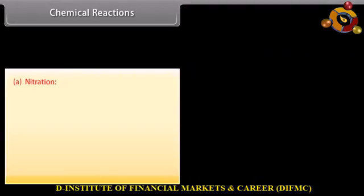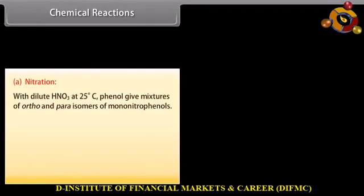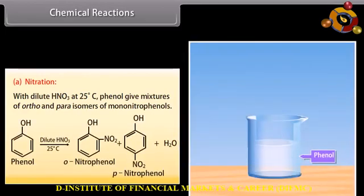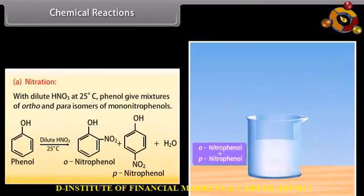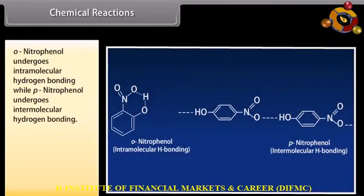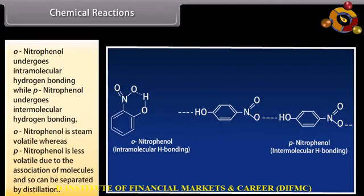Nitration: with dilute nitric acid at 25°C, phenol gives a mixture of ortho- and para-isomers of mononitrophenols. Ortho-nitrophenol undergoes intramolecular hydrogen bonding while para-nitrophenol undergoes intermolecular hydrogen bonding. Ortho-nitrophenol is steam-volatile whereas para-nitrophenol is less volatile due to the association of molecules, and so can be separated by distillation.